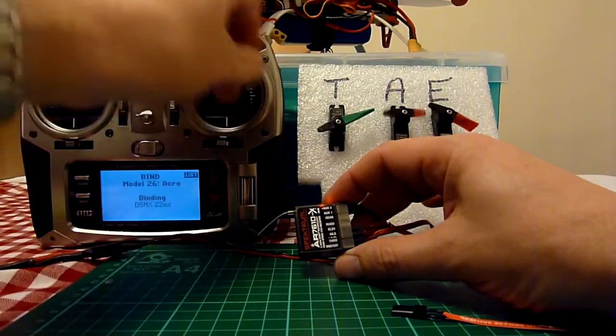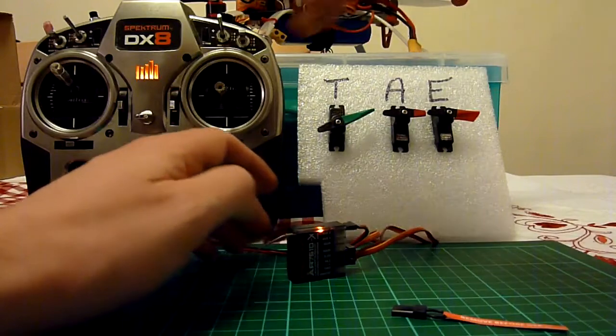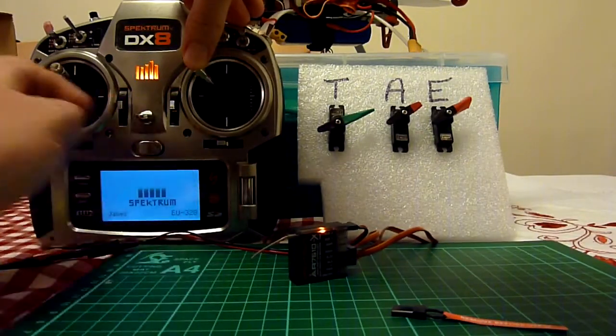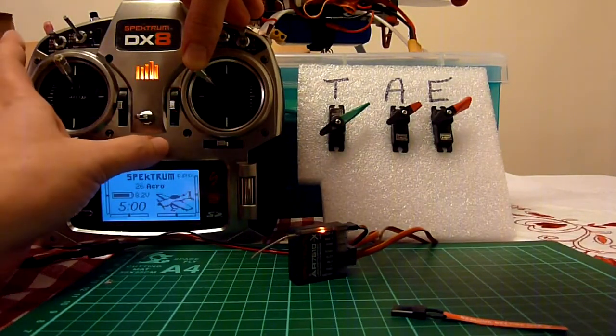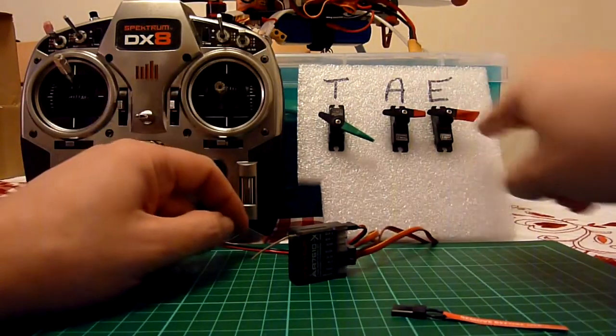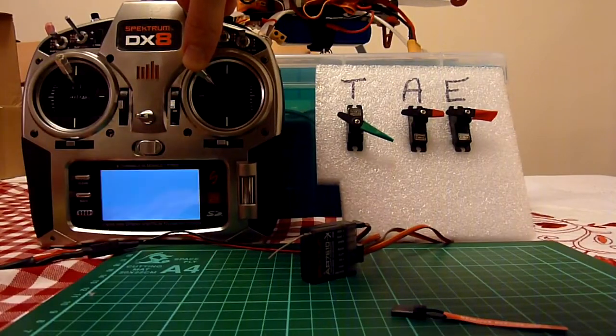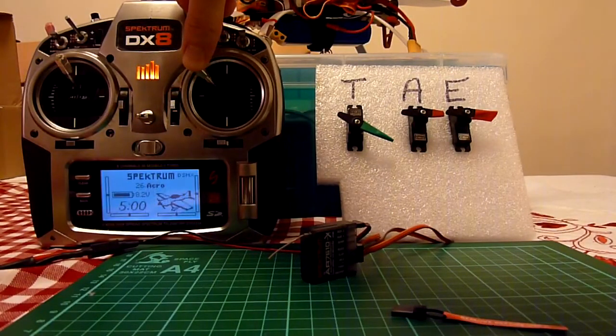So I've got control exactly like before. The difference is now if I hold the servo positions, when I turn off the transmitter they'll all go back to their bind positions. So these have gone back to centre, this has gone to low throttle, and when I turn it back on they will jump back to the positions I'm holding.